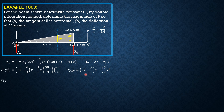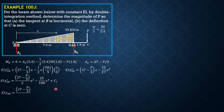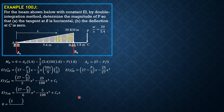Integrating: EI Y' AB equals (27 minus B/3)(X²/2) minus 25X⁴/108 plus C₁. There is no C₂ because when X is 0, Y at A is 0. Integrating again: EI Y_AB equals (27 minus B/3)(X³/6) minus 5X⁵/108 plus C₁X. Boundary conditions: X equals 5.4, Y equals 0; and for the given condition, when X equals 5.4 the tangent is horizontal, meaning slope Y' AB equals 0 at X equals 5.4.